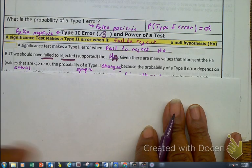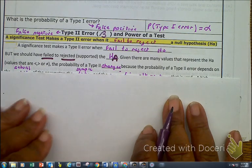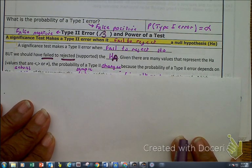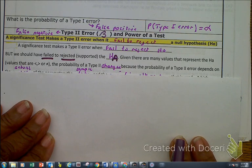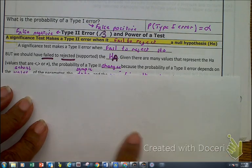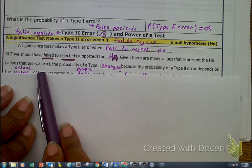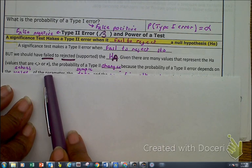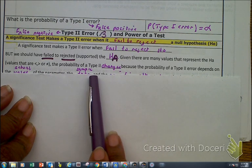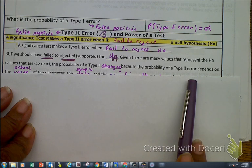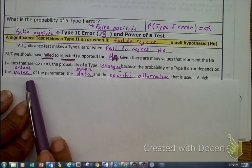There are many values that can be represented as alternatives to the null hypothesis. It basically depends on whether it's going to be a less than, greater than, or equal to. The probability of your type 2 can change because your type 2 error depends on an actual value.